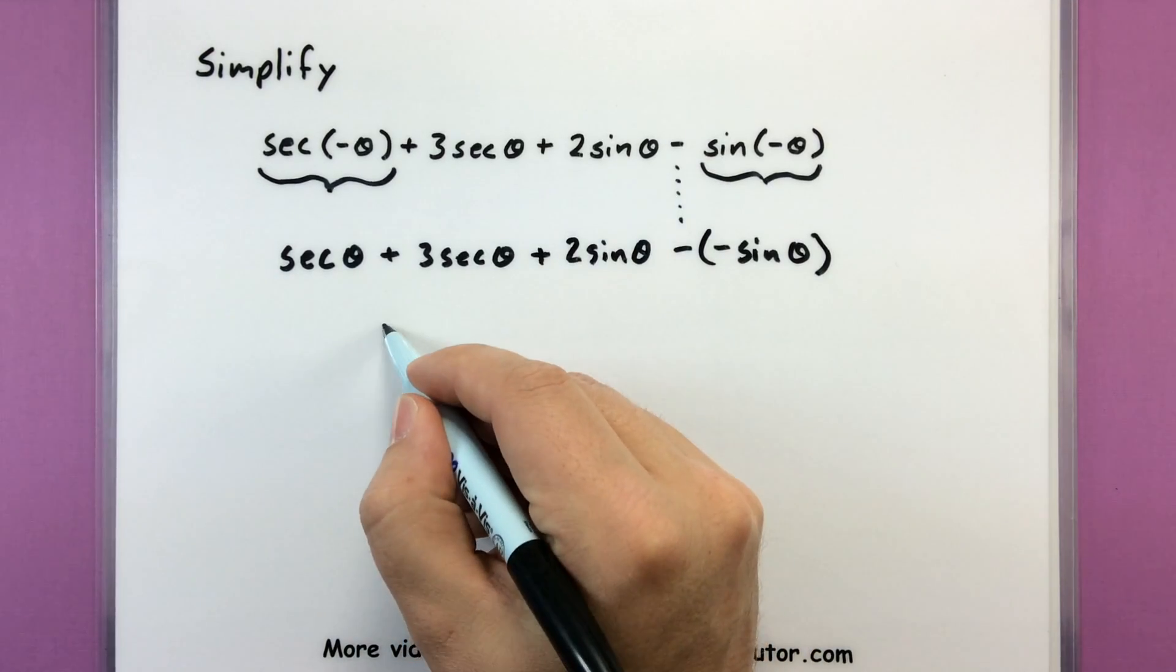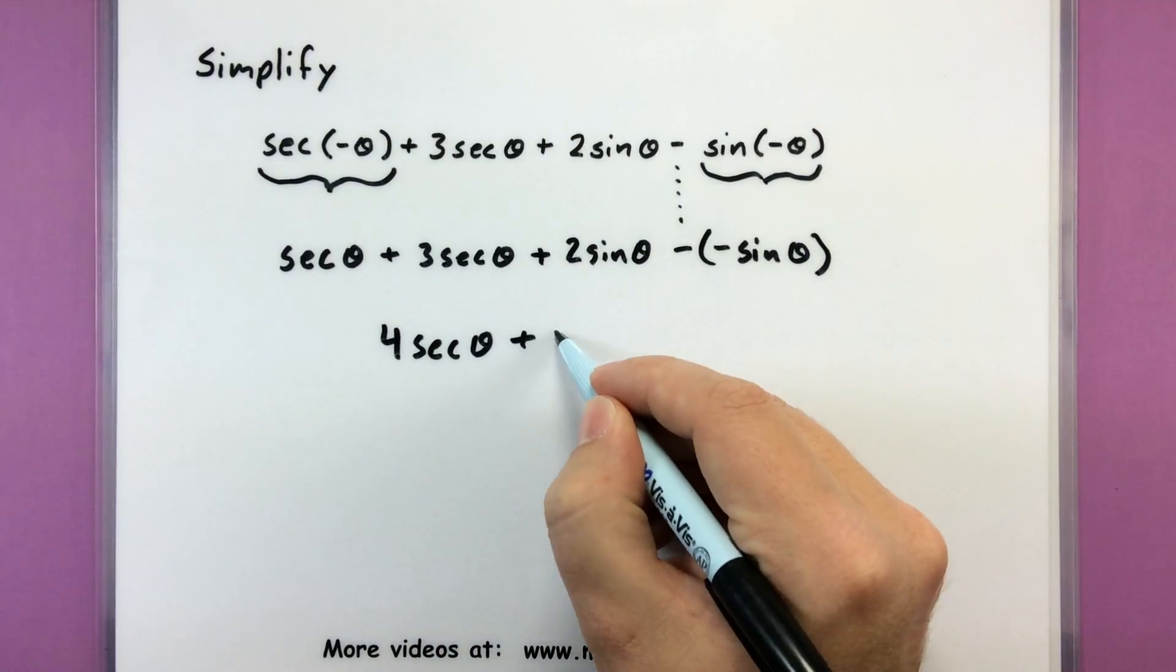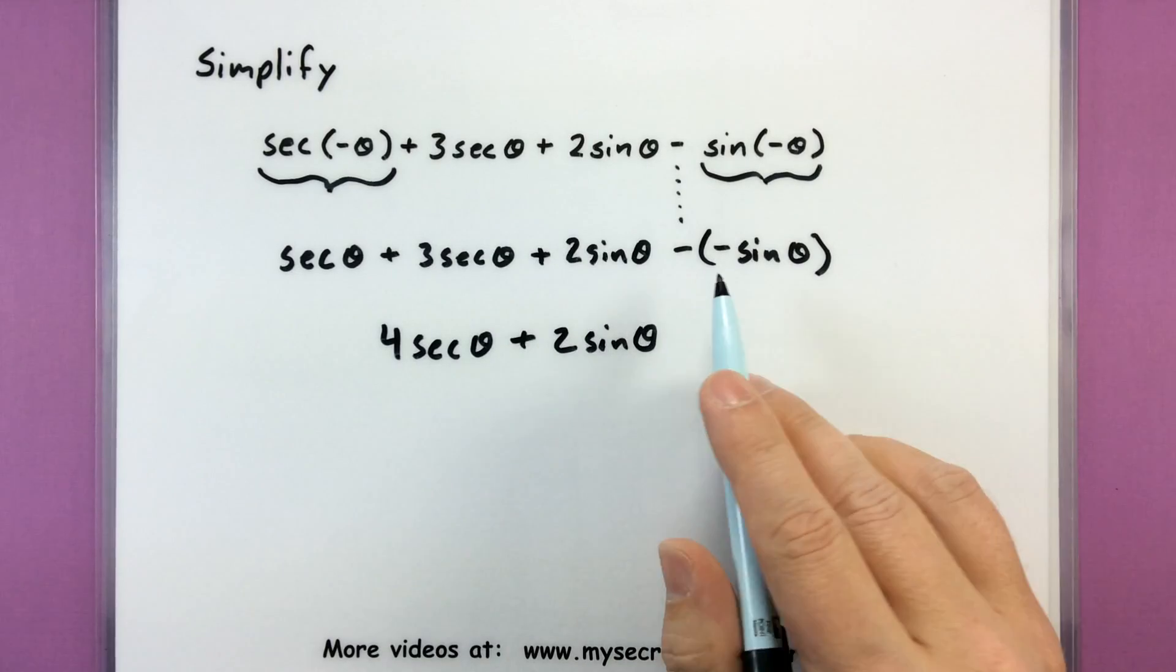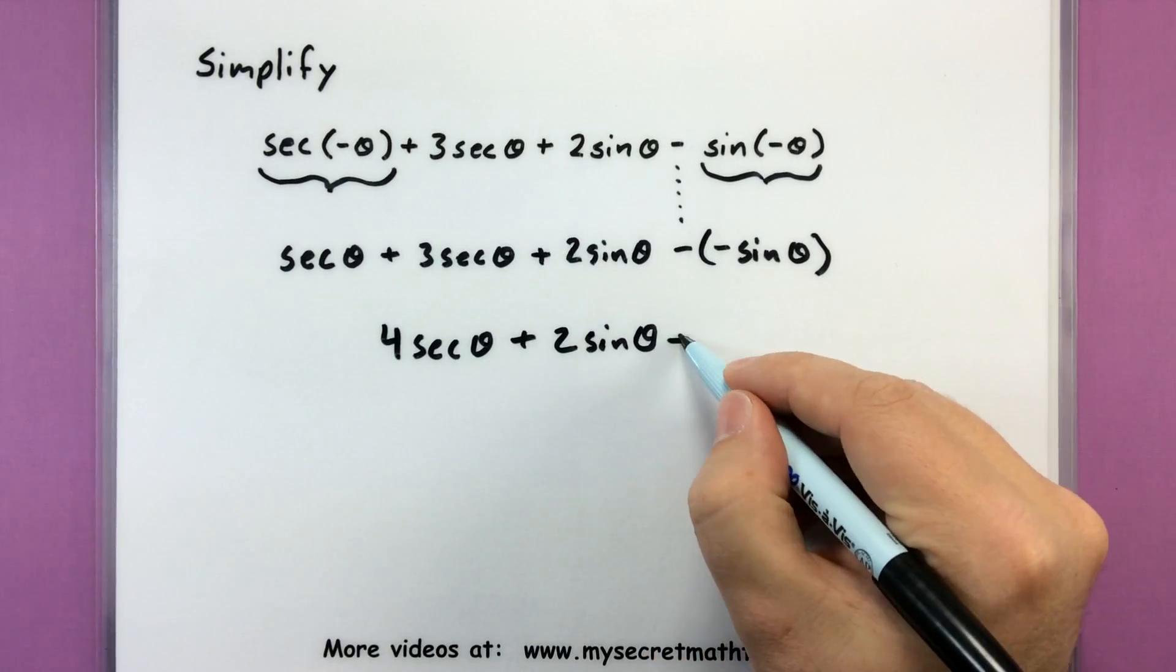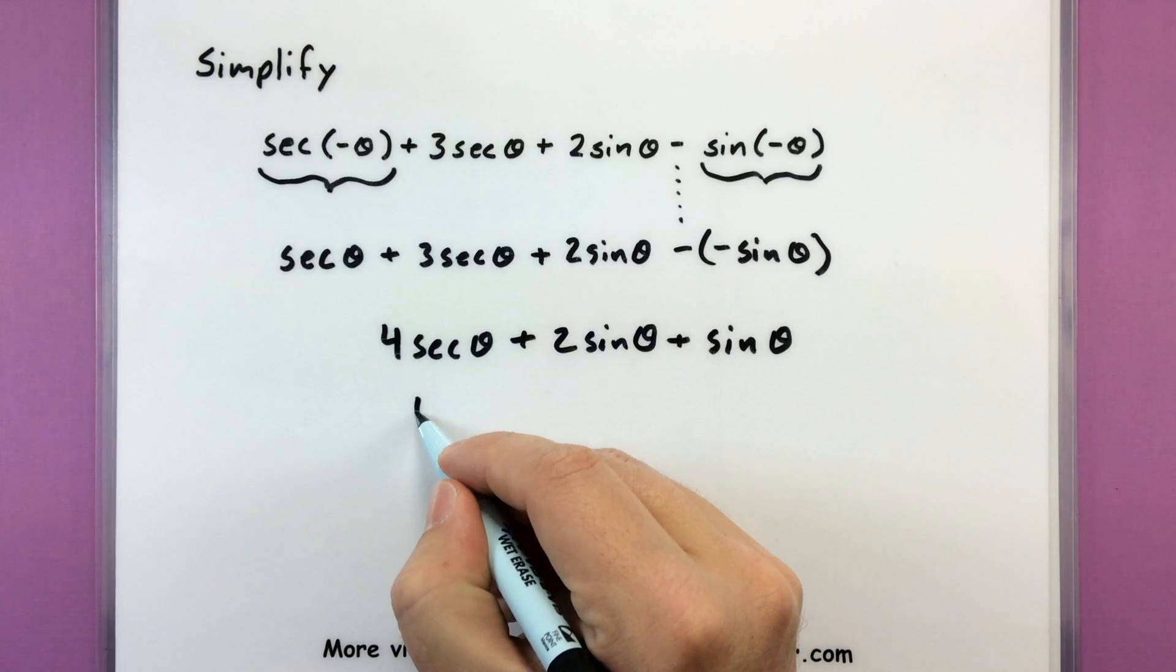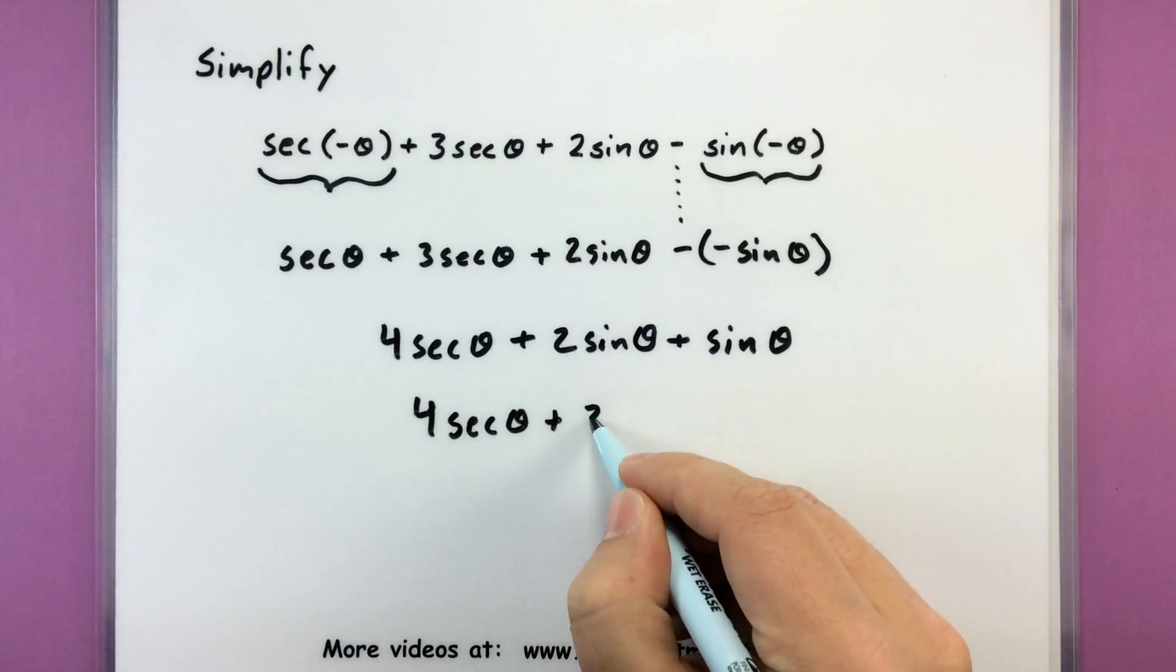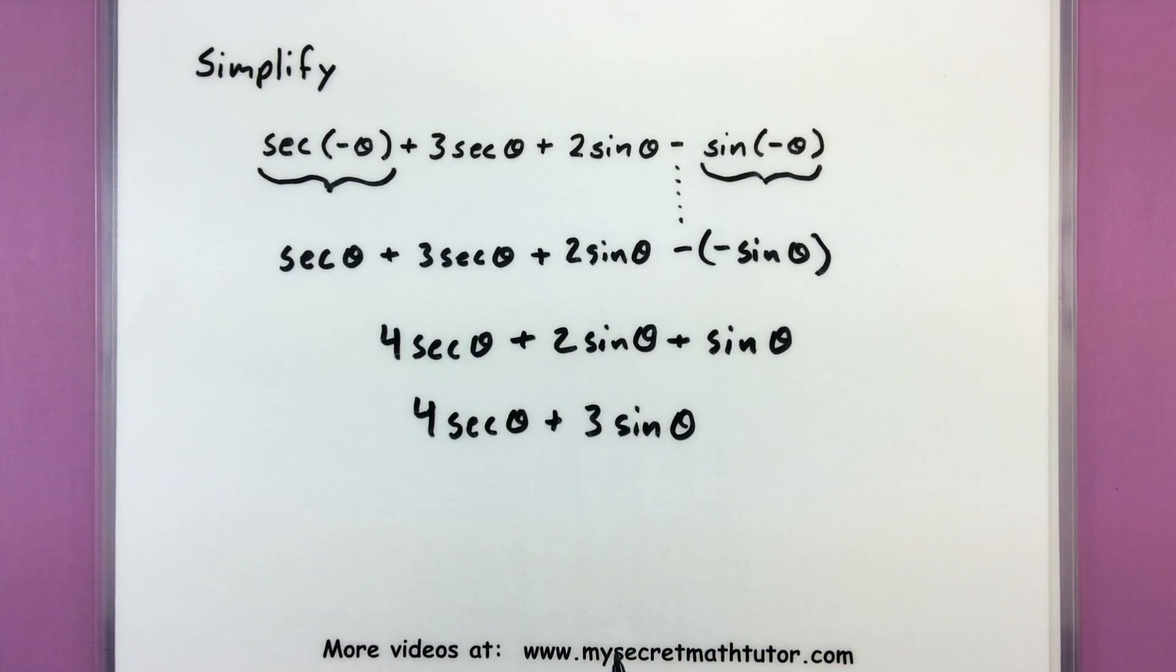So now I can see we have some combining to do. I have one secant plus three secants for a total of four secants. And then my negative times a negative will give me a positive sign over here. And then I can go ahead and combine these two sines. So two sine plus one sine, a total of three sine. And now we're done. Since secant and sine are two different trigonometric functions, I don't necessarily need to combine those. So four secant theta plus three sine of theta.